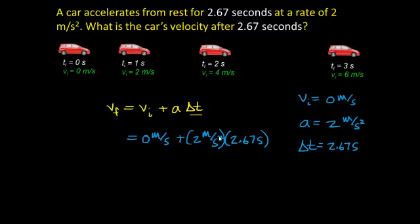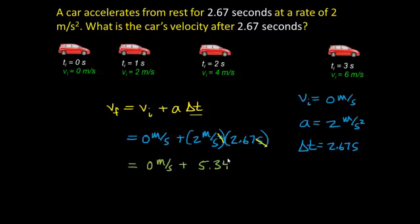Notice that the squared seconds unit in the denominator of acceleration cancels with the seconds unit from the time, leaving meters per second — the correct unit for velocity. Solving: 0 plus 2 times 2.67 gives 5.34, so the final velocity is 5.34 meters per second.